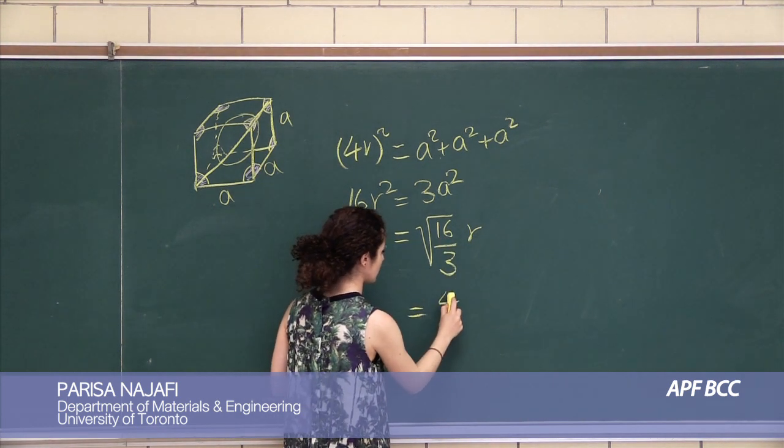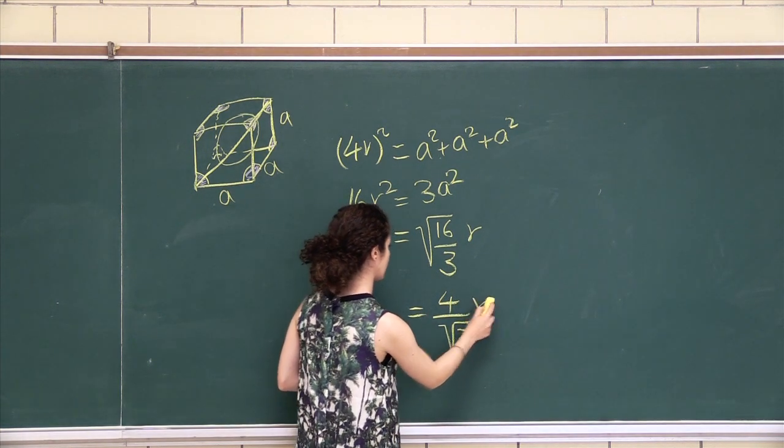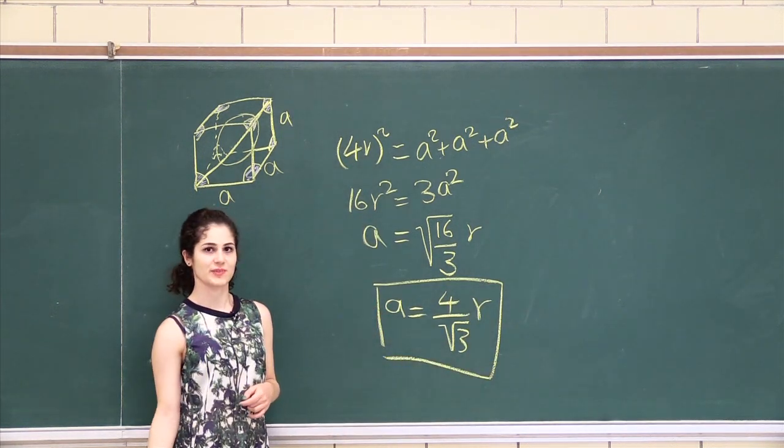which is the same as 4 over root 3, times R. And that is your atomic packing factor for BCC.